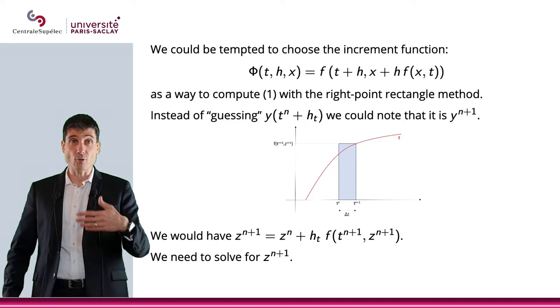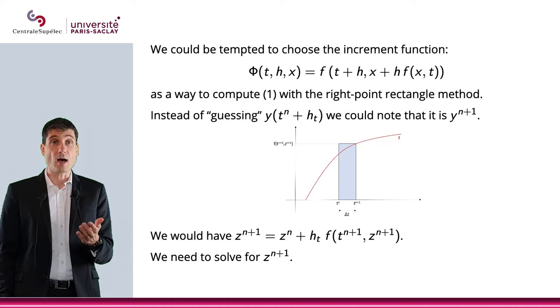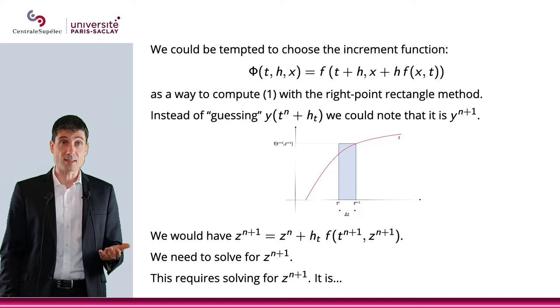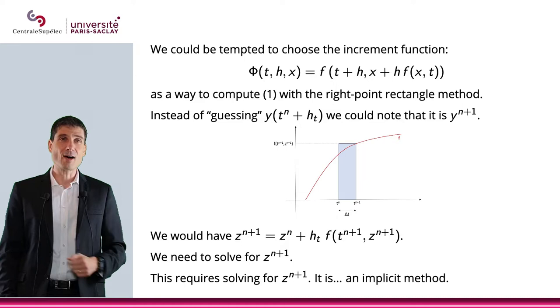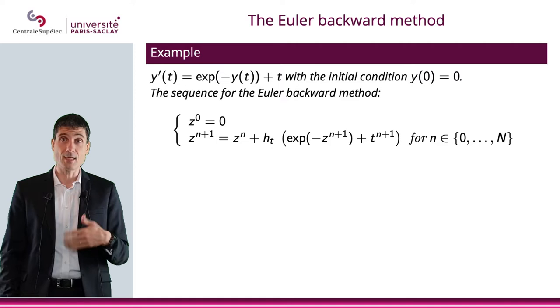The scheme we have is zⁿ⁺¹ = zⁿ + hₜf(tⁿ⁺¹, zⁿ⁺¹). At this point, we need to solve for zⁿ⁺¹. We have an equation with zⁿ⁺¹ in it, which means that we have an implicit method. Let me define the Euler backward method as the method obtained when zⁿ⁺¹ = zⁿ + hₜf(tⁿ⁺¹, zⁿ⁺¹), which obviously is an implicit method.